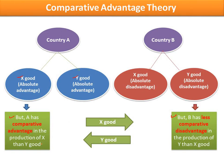Under this situation, A will specialize in the production of x and export some amount of x to country B. Conversely, B will specialize in the production of y and export some amount of y to country A. In this way, based on the law of comparative advantage, both countries can involve in gainful trade between them.